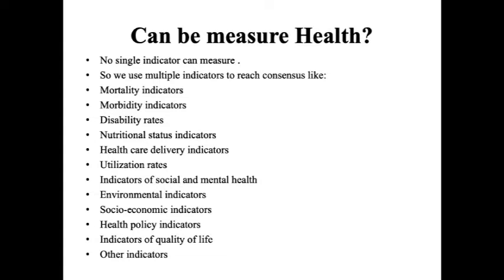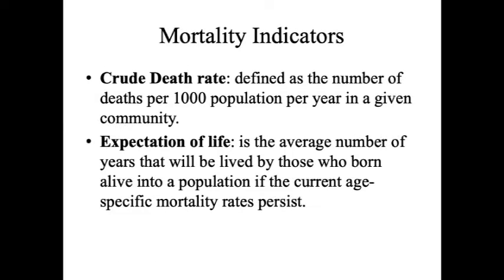Can we measure health? No single indicator can measure health, so we use multiple indicators to reach some consensus. We use different types of indicators: mortality indicators, morbidity indicators, disability rates, nutritional status indicators, healthcare delivery indicators, utilization rates, indicators of social and mental health, environmental indicators, socioeconomic indicators, health policy indicators, indicators of quality of life, and many others.